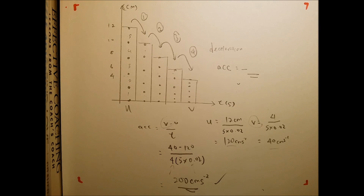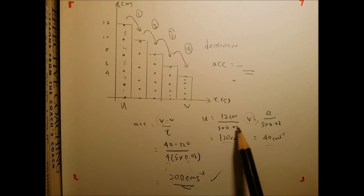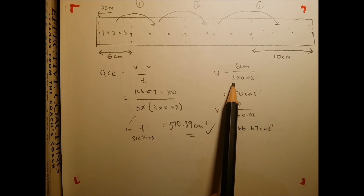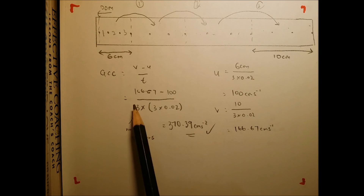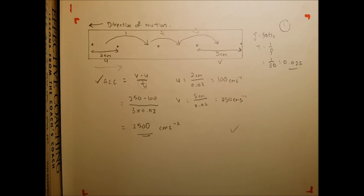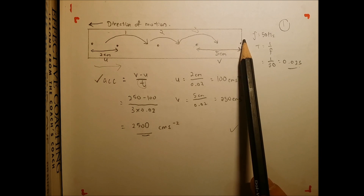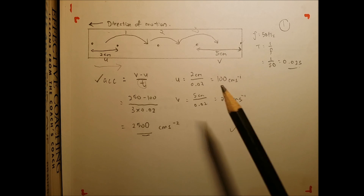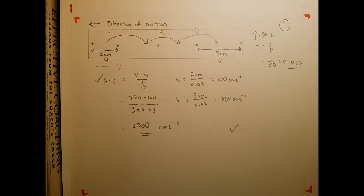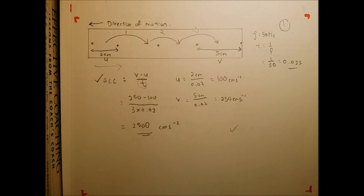The steps are always standard: calculate acceleration, calculate initial and final velocity. For section-type, multiply by 0.02 per interval. For jumps, count across strips. For the most basic type, the time is just 0.02 seconds between dots. You can pause this and review before your Form 4 first term exam — this is a very important sub-topic. Please leave comments so I can improve video quality and choice of questions. For more understanding and theory, contact me on Facebook at Junghao. Thank you very much.